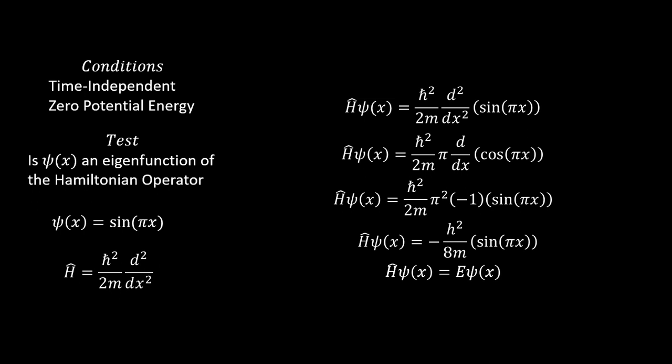Now, if we take our Hamiltonian time independent with zero potential energy, that would be ℏ² over 2m times the second derivative with respect to x of our wave function, which we're setting as sin(πx). Therefore,